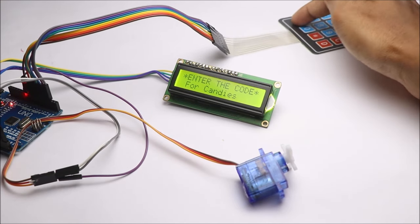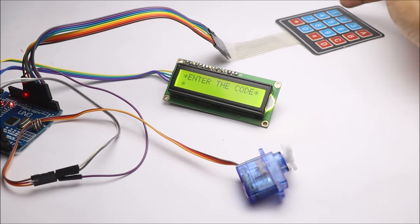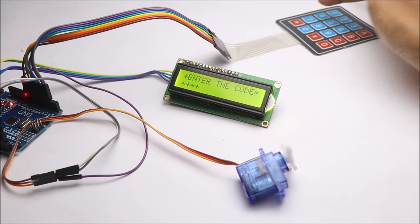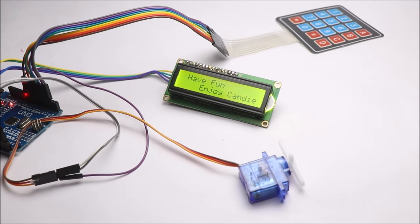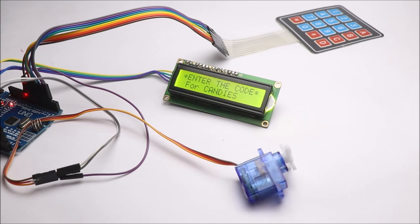The default password to activate the servo is 1234. If you enter any other code, the LCD module will show an error message and the servo remains idle.